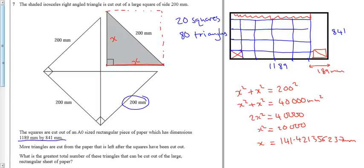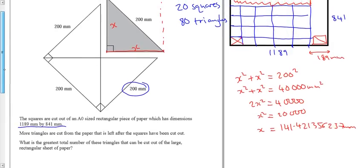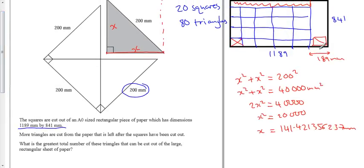That tells us that if it's 140, I can get one wide, and I can get, well how many can I get up, let's do it. 841 divided by 141, means I can get roughly 5.9, so unfortunately I can't get quite a 6th one up. I can only get 5 up.